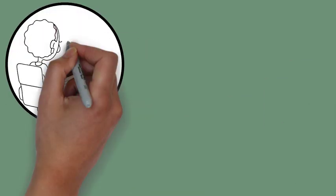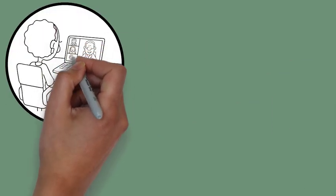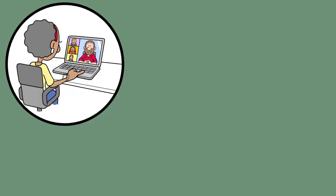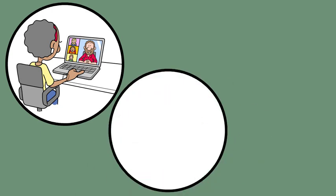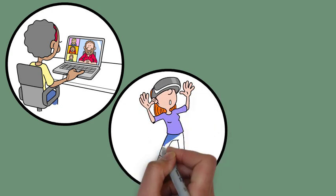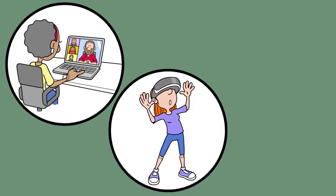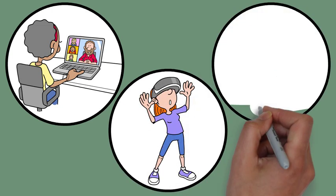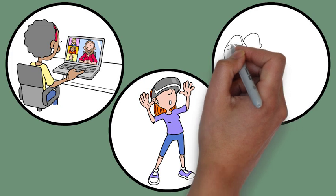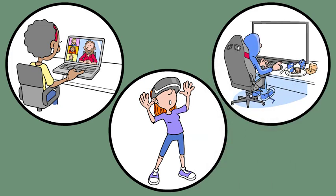Bronfenbrenner's theory helps us understand that social changes — such as technological advances or shifts in cultural norms — can influence all layers of the ecological systems. For instance, the rise in digital technology affects how children interact with their peers and learn, which is a change within their microsystems and broader exosystem.